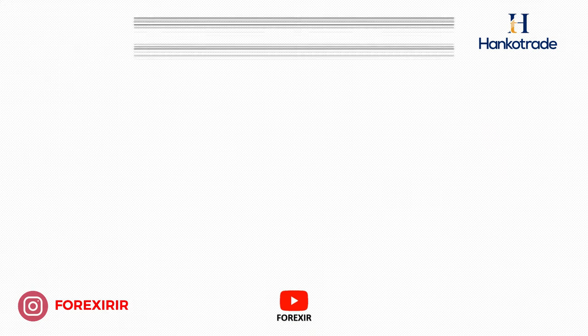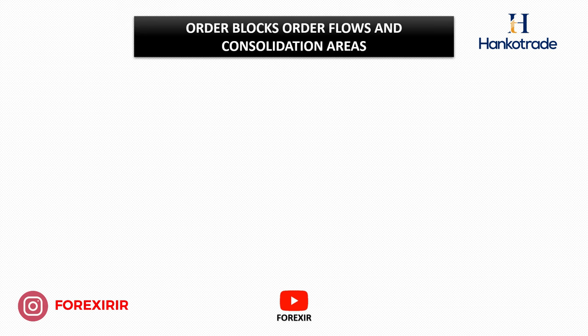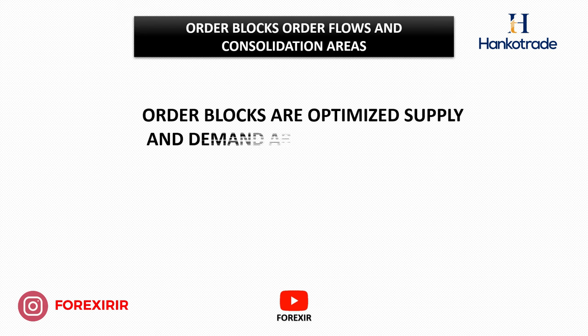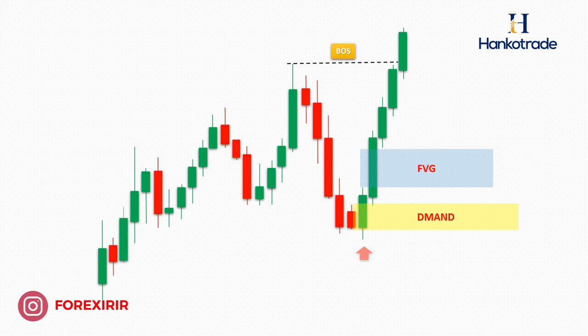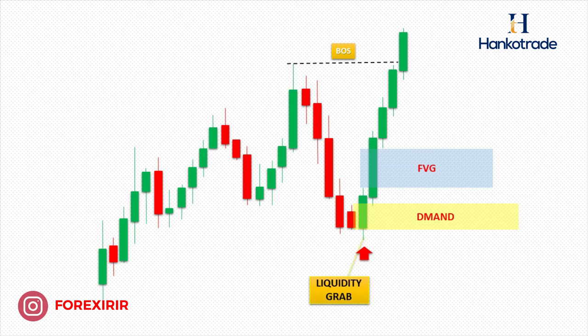Now, we mark three types of supply and demand zones on the chart based on the market structure formation. These include order blocks, order flows, and consolidation areas. Order blocks represent strategically optimized supply and demand areas. Here, we witness aggressive buying activity characterized by clear fair value gaps, leading to a structural break. The most recent candle that generated these fair value gaps serves as our reference point. Take note of how the price efficiently swept the liquidity below this candle before embarking on an upward trajectory.